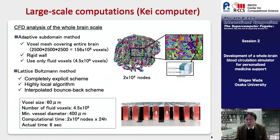Using the K-computer, a 24-hour calculation process with 20,000 nodes gave results for six seconds of simulated blood flow.